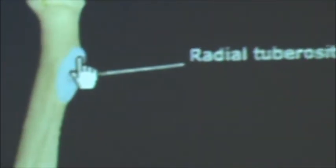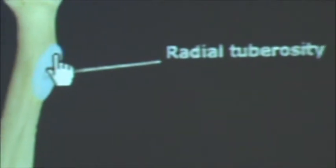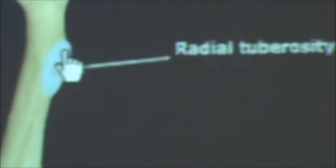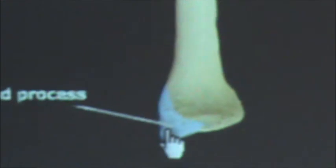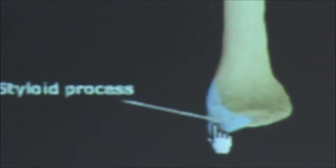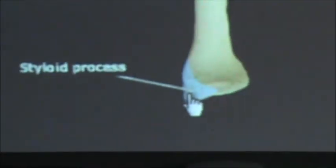Now we're going to come down to the bottom of the radius and identify the styloid process. If you notice a resemblance, it's just like when we discussed the ulna — just like the styloid process there.